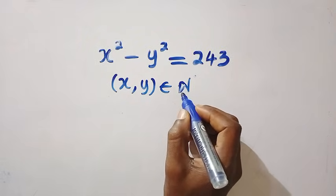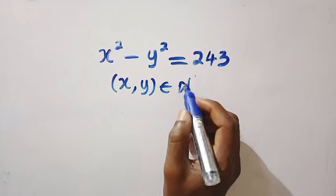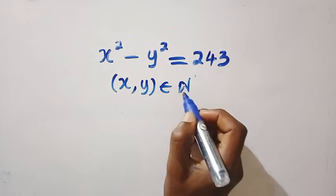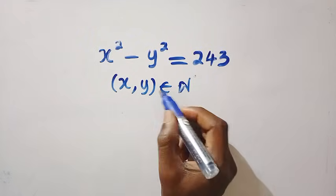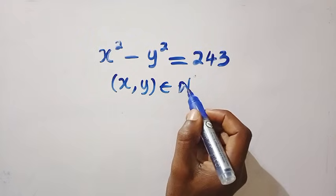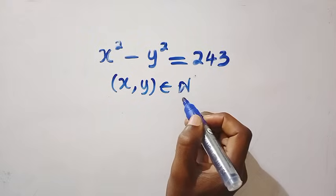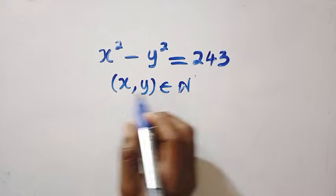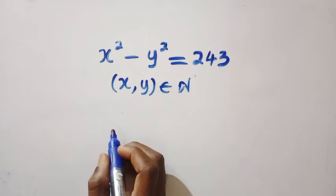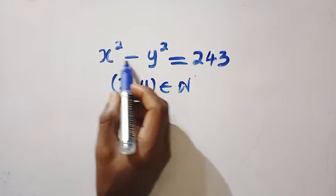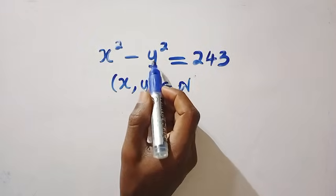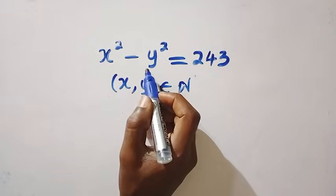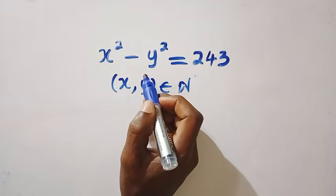Here are our restrictions. We are going to restrict to only when x and y are natural numbers — only positive. So to solve this, we have x squared minus y squared as a difference of two squares.